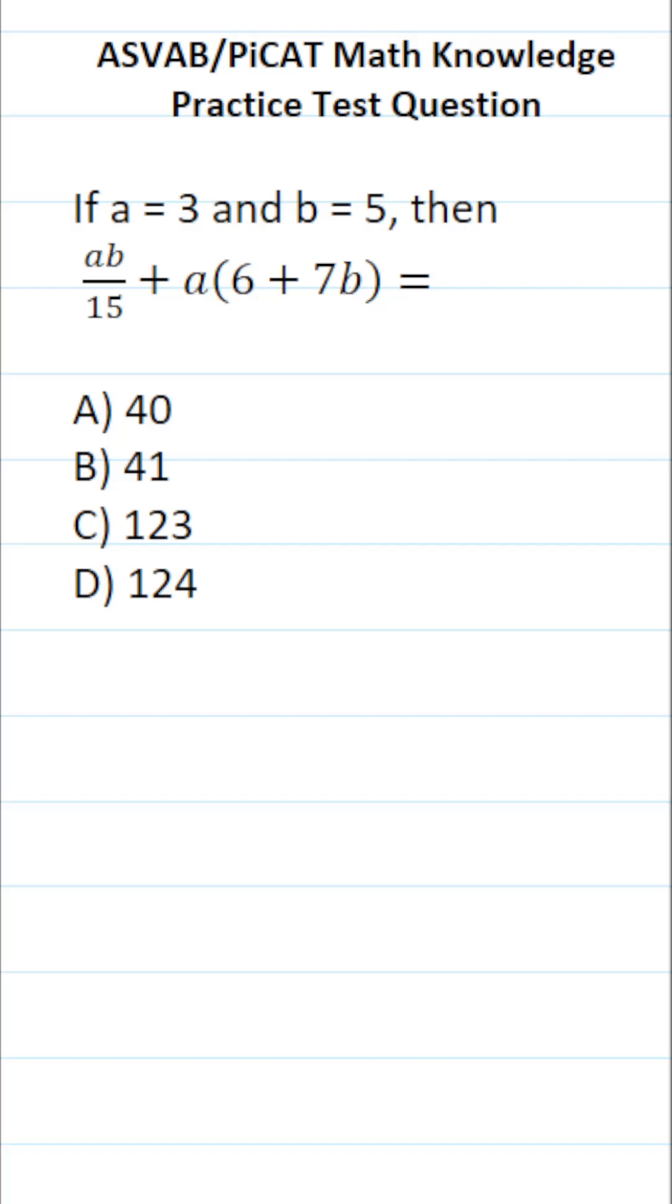This math knowledge practice test question for the ASVAB and PiCAT says if A equals 3 and B equals 5, then A times B over 15 plus A times 6 plus 7 times B equals.